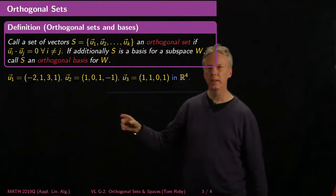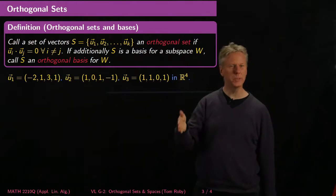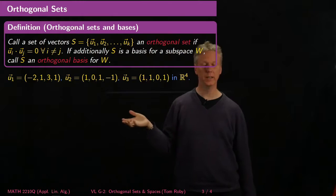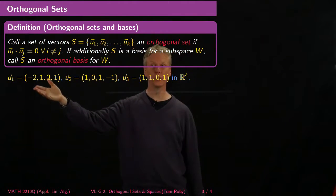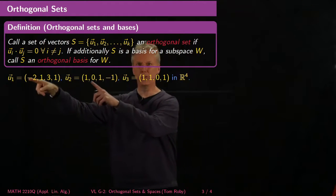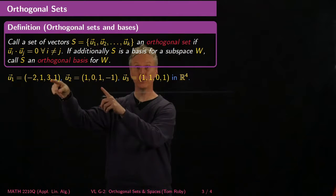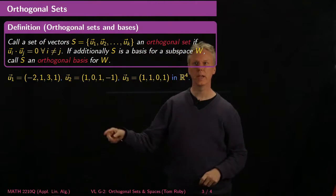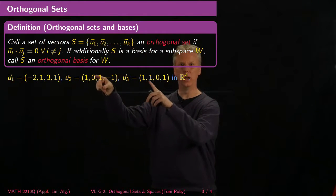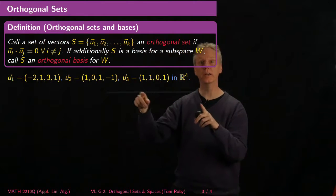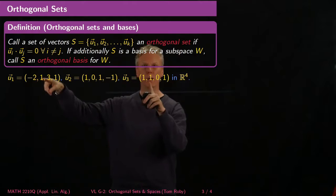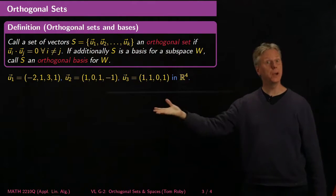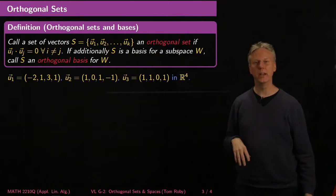Here's a simple example. Let's look at these three vectors in R4 — I'm writing them with round parentheses and commas as a space-saving notation. When I take the inner product of u1 with u2, I get negative 2 times 1 plus 1 times 0 plus 1 times 3 plus 1 times negative 1, which totals 0. I also do u2 and u3 and get 1 plus 0 plus 0 plus negative 1, which is 0. And for u1 and u3, I get negative 2 plus 1 plus 0 plus 1, which is 0. So these three vectors are all pairwise orthogonal.